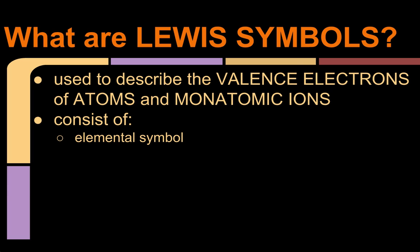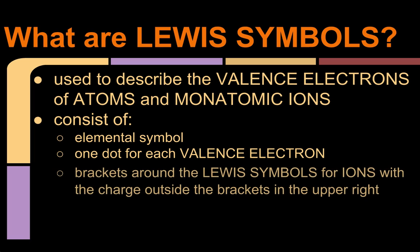This consists of an element symbol, so one of the first steps you have to do is draw the element symbol for whichever atom you're looking at, and you have to represent one dot for each valence electron of that atom. And then a special exception is there's brackets around Lewis symbols for ions with the charge outside the brackets in the upper right, and I'm going to show you an example of that if that's confusing.